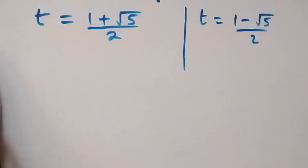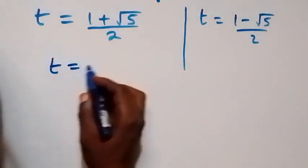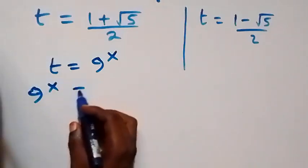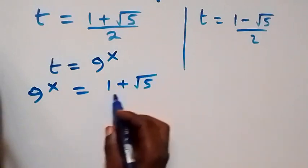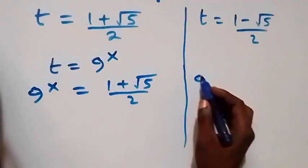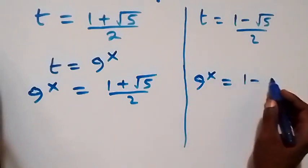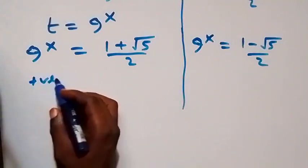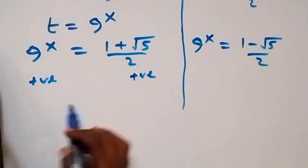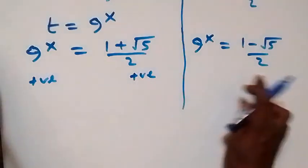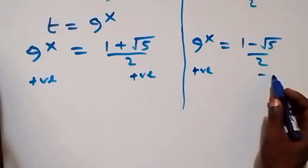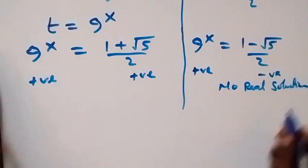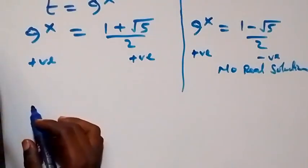Recalling that t equals 9 raised to power x, we now have 9 raised to power x equals 1 plus root 5 over 2, and also 9 raised to power x equals 1 minus root 5 over 2. The first value is positive, which is greater than 0, so there is a valid solution. The second value is negative, so there is no valid solution from that side, and we reject it.